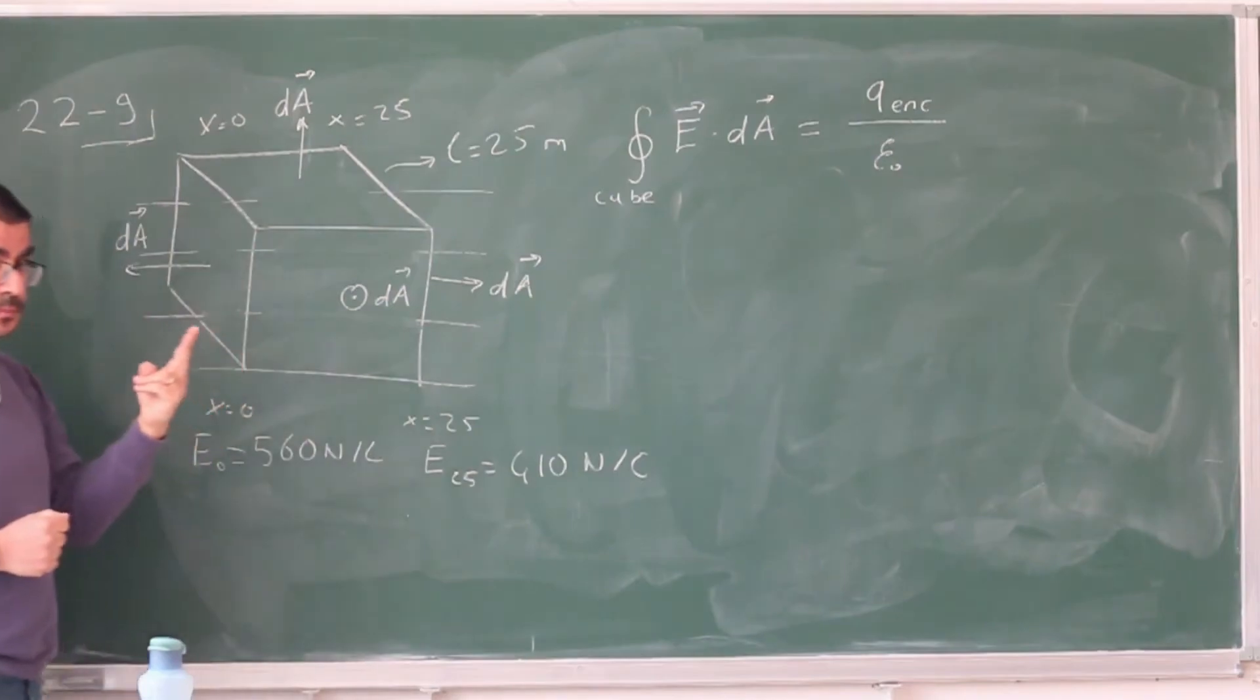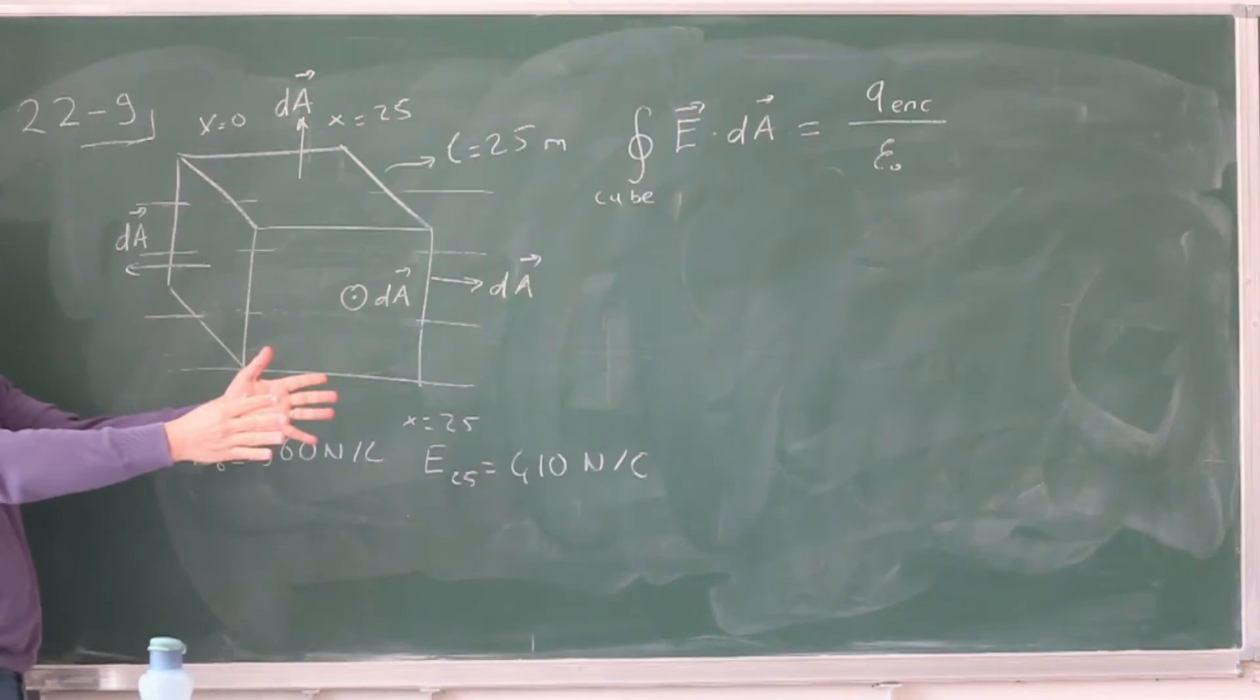Now, dot product has two special cases. When the two vectors are perpendicular to each other, the dot product vanishes. And when they're parallel to each other, it's just a simple product. And if they're anti-parallel, then it's a simple product with a negative sign.